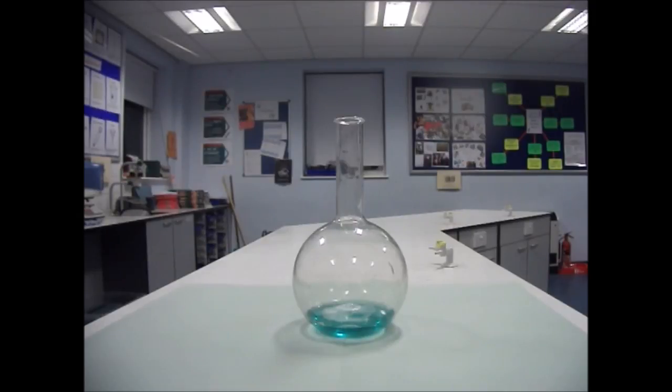Inside the round bottom flask I've got some 100 volume hydrogen peroxide and a small amount of household detergent, normal washing up liquid.